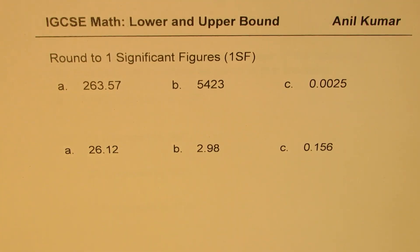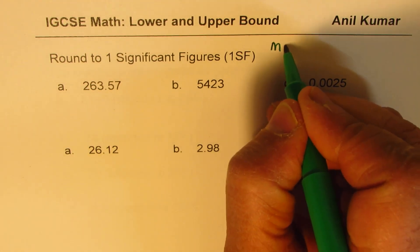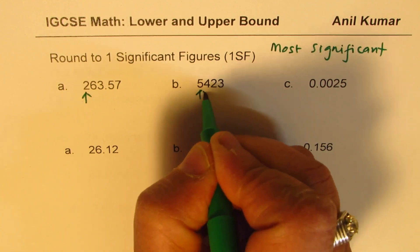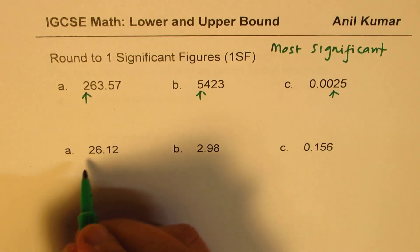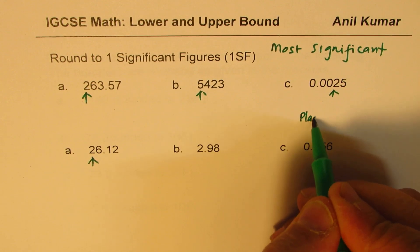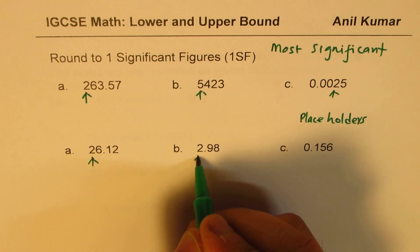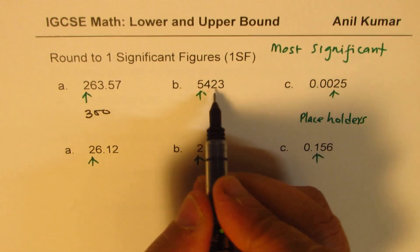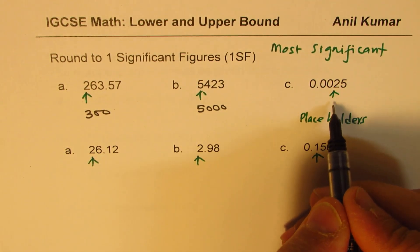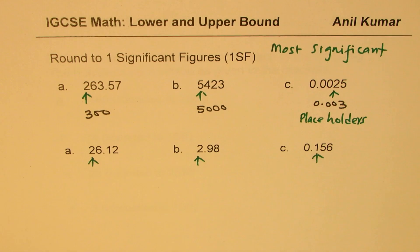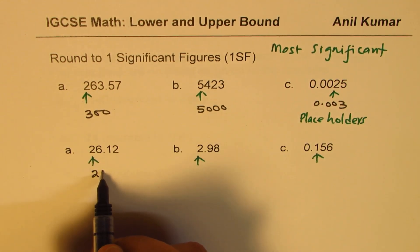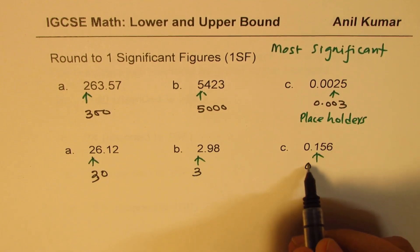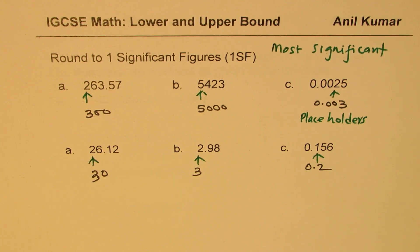Now let's look at one significant figure — meaning the absolutely most significant, the very first non-zero digit from the left. The leading zeros are placeholders and must be excluded. So the most significant digits in the given numbers are identified, and rounding to them gives: 300, 5000, 0.003. Another number becomes 20, and because the significant digit is 2, it stays as 20. Then 2.9 rounds to 3, and another gives 0.2. That is the meaning of one significant figure.